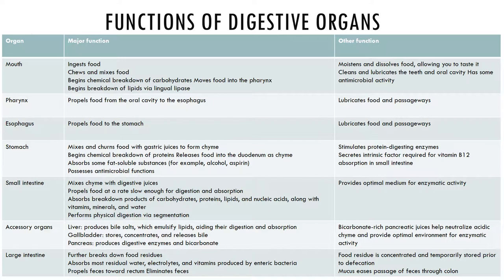The accessory organs are found along the length of the GI tract. There are several accessory structures that produce secretions containing water, enzymes, buffers, and other components that assist in preparing organic and inorganic nutrients for absorption. The primary accessory organs include the salivary glands, liver, gallbladder, and pancreas.